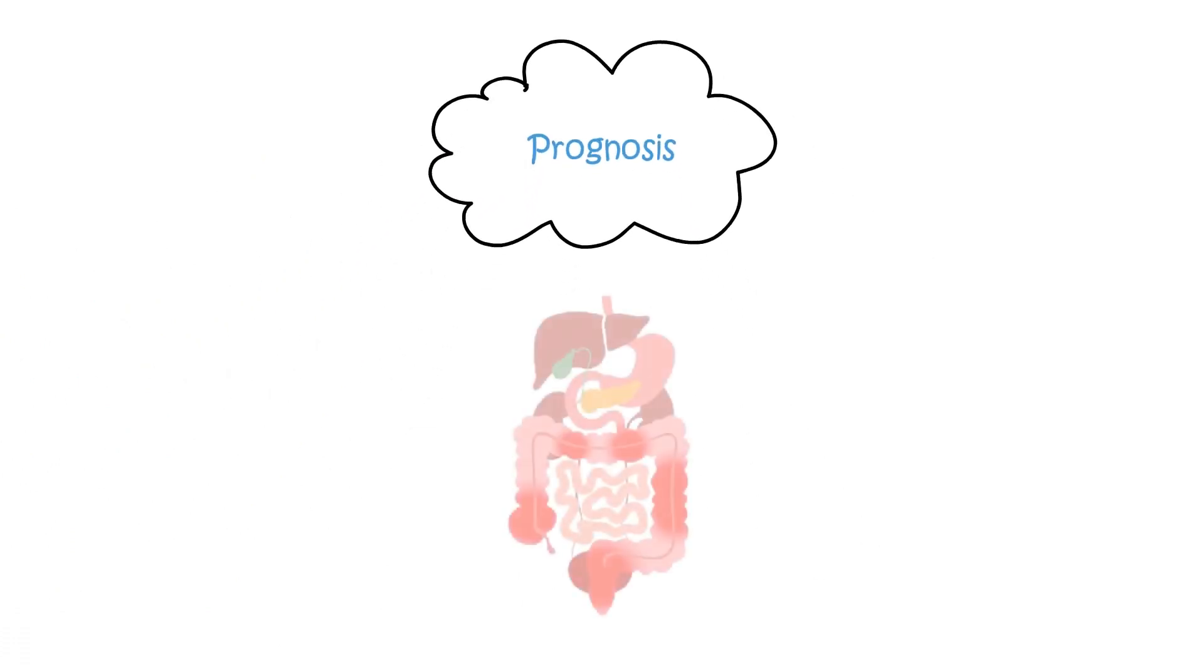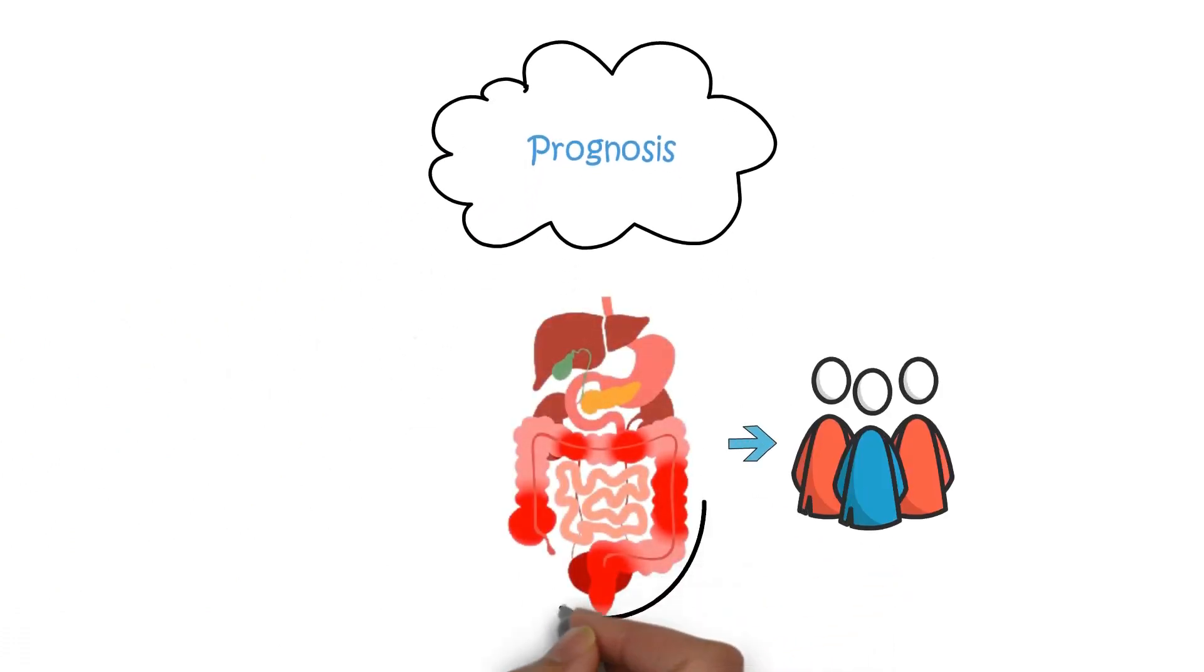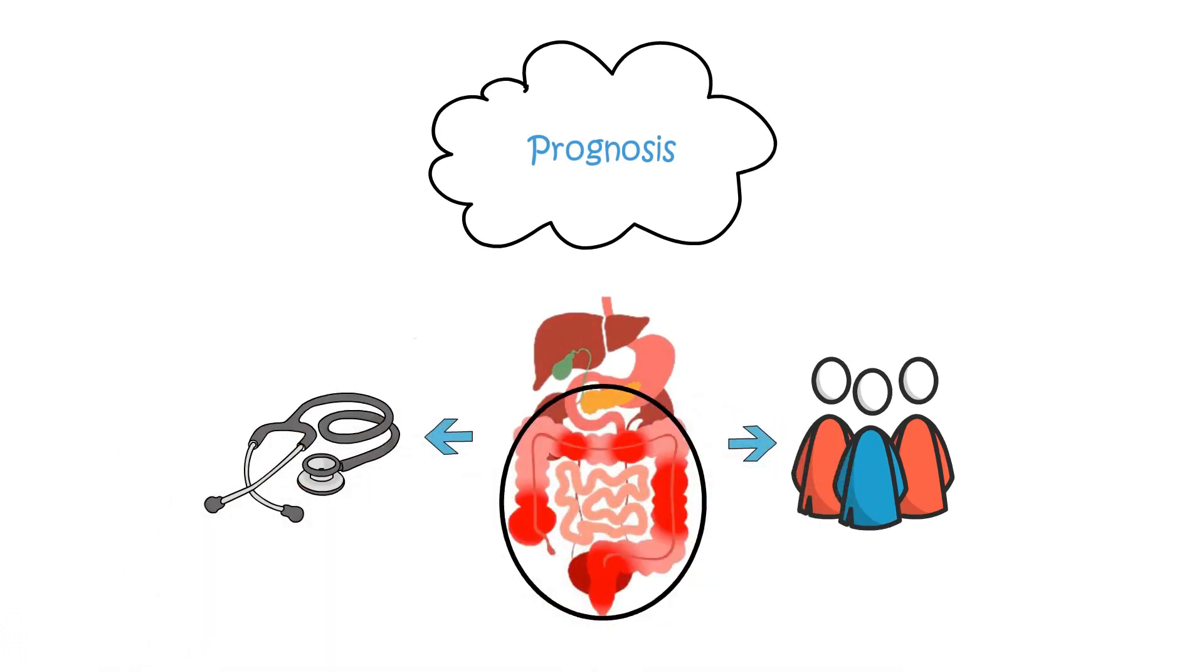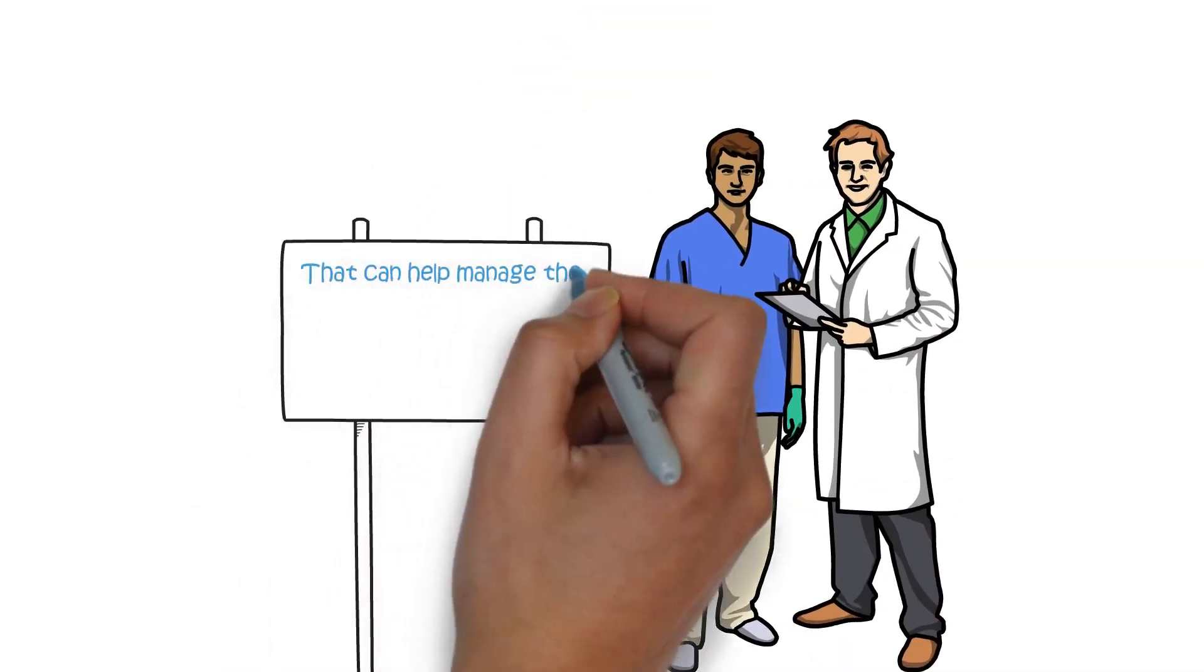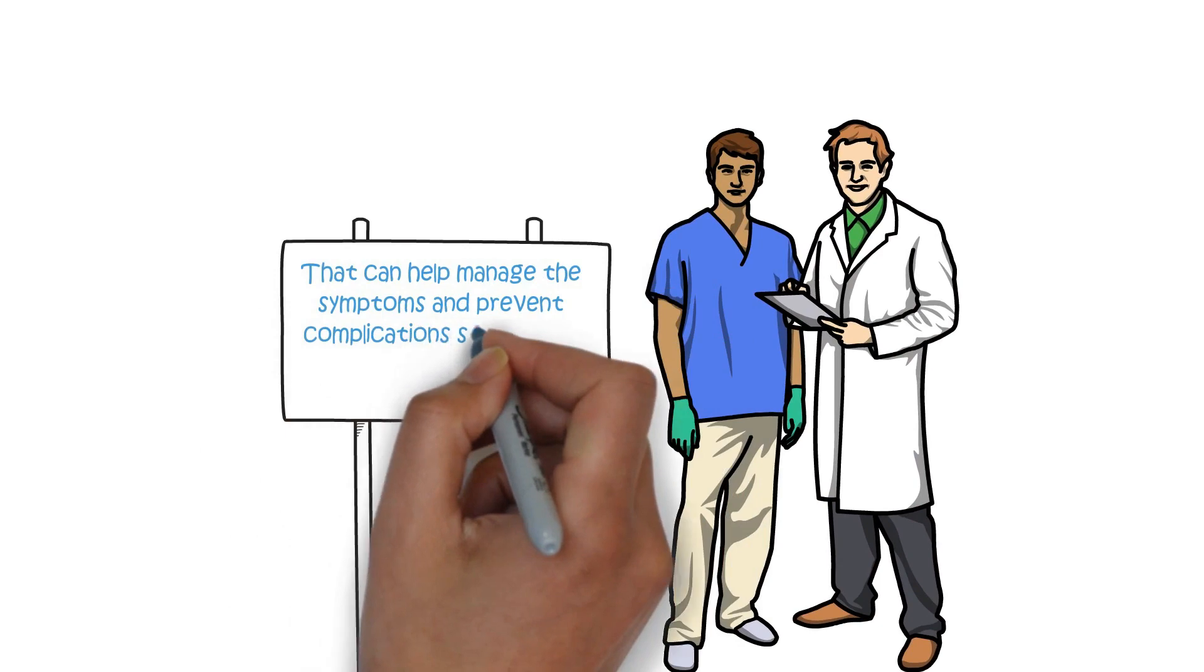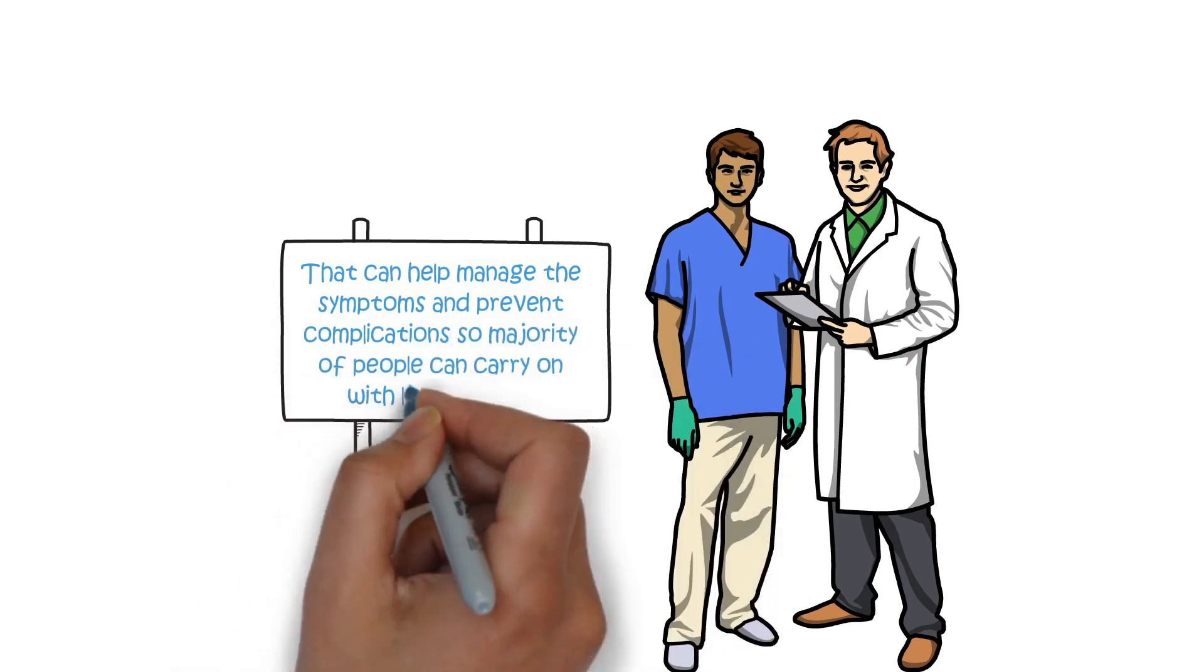Prognosis. The prognosis for Crohn's varies from person to person and depends on the severity and location of the disease and the effectiveness of the treatment. While there is no cure for Crohn's, there are effective treatments available that can help manage the symptoms and prevent complications so majority of people can carry on with life as normal.